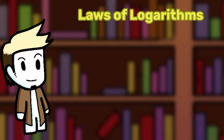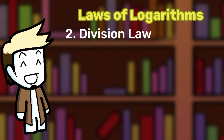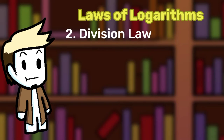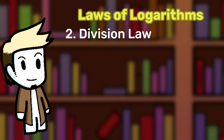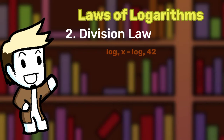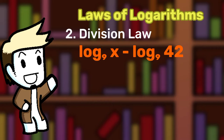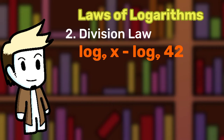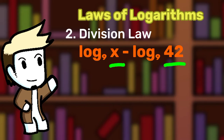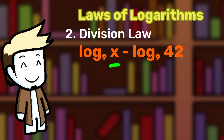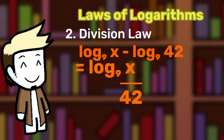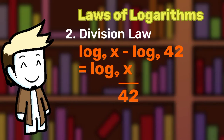Second, the division law. This law is similar to the product law, except this time it's the reverse. Let's say you have this expression: log base 9 of X minus log base 9 of 42. You can just simplify it by dividing X and Y, which will become log base 9 of X over 42.